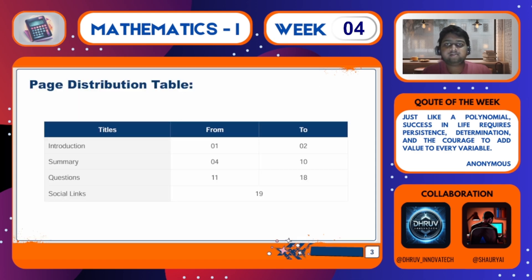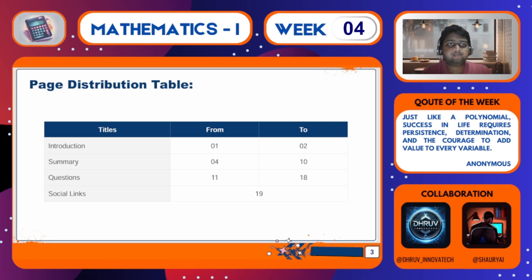So before we begin, let's go through the quote of the week by Anonymous: just like a polynomial, success in life requires persistency, determination and courage to add value to every variable. That's why never give up and always keep trying hard.